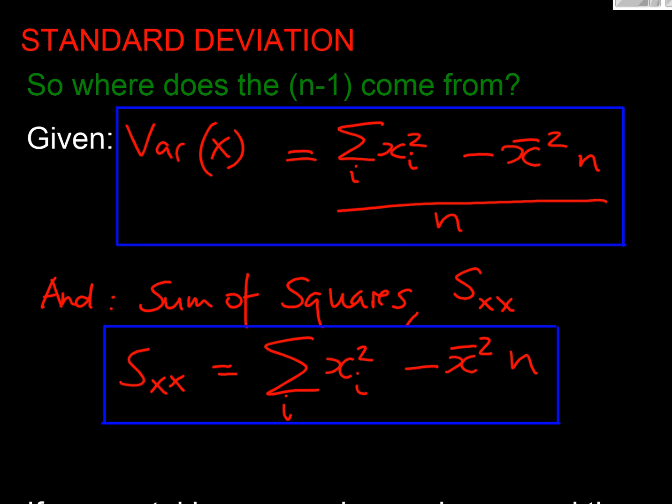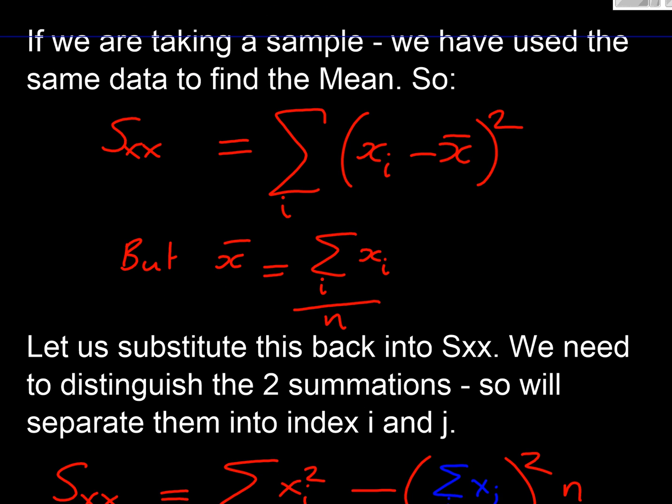Can I assume you understand the variance takes this form which is in our formula books, and that the sum of squares will be useful for us to know is in this form here you'll see in your formula books. So where's this all coming from?